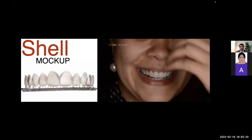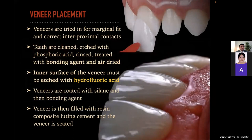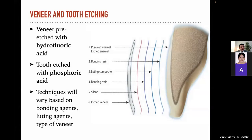Now for veneer placement: the final veneers are tried in for marginal fit and correct interproximal contacts. Teeth are cleaned, etched with phosphoric acid, rinsed, treated with bonding agent, and air dried. The inner surface of the veneer must be etched with hydrofluoric acid. Veneers are coated with silane and then bonding agent. The veneer is then filled with resin composite luting cement and seated. The key point is: the tooth is etched with phosphoric acid and the veneer pre-etched with hydrofluoric acid. The anatomy layers are: pumice enamel, etched enamel, bonding resin, luting composite, bonding resin, silane, and etched veneer.